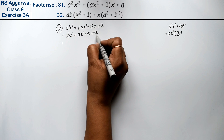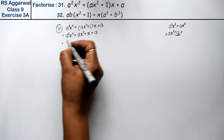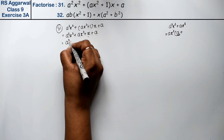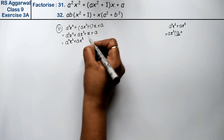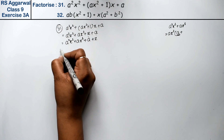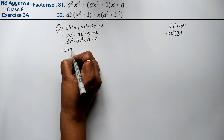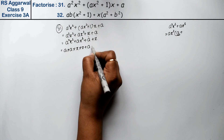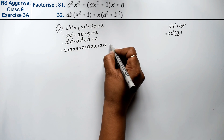So we take 1, then x comes here. We can reverse the order if we want — there's no problem. So we write plus a plus x. Now let's look at both parts: a into a into x into x, plus a into x into x, plus a plus x.